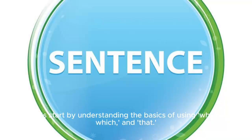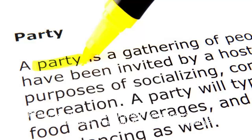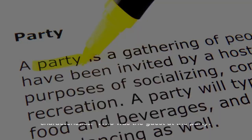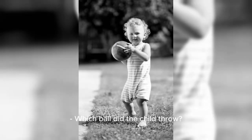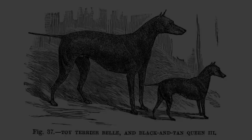Let's start by understanding the basics of using who, which, and that. Firstly, who is used to ask about someone's identity or characteristics. For example: Who was the guest at the party? Which ball did the child throw? That dog was large and black.